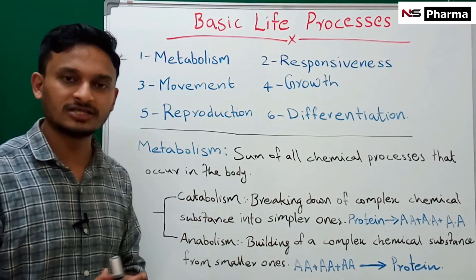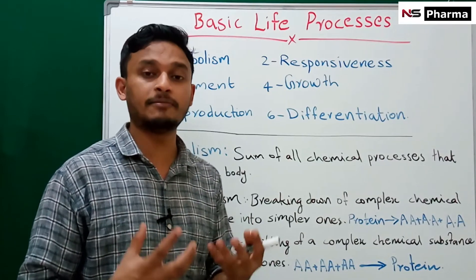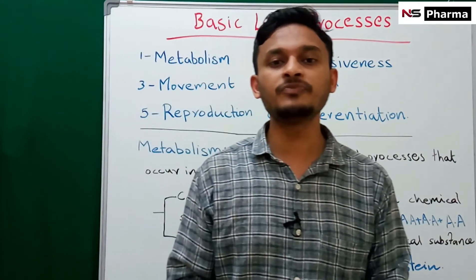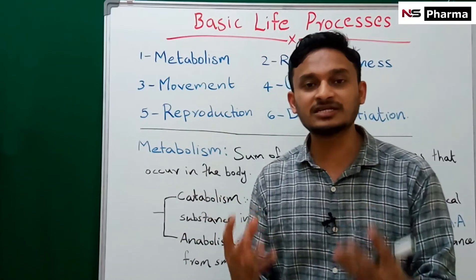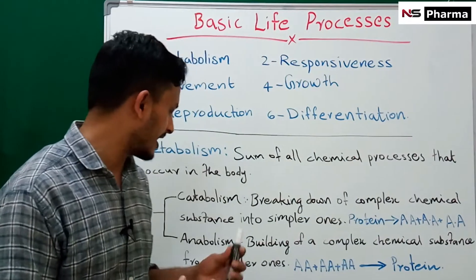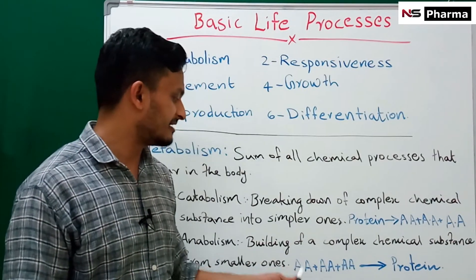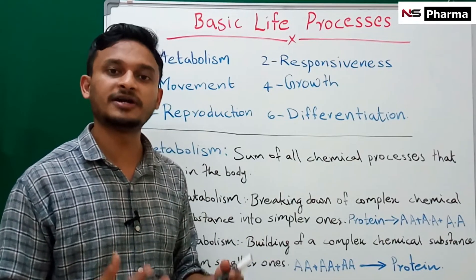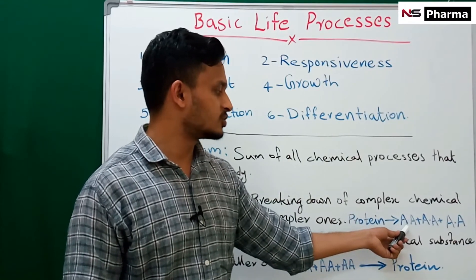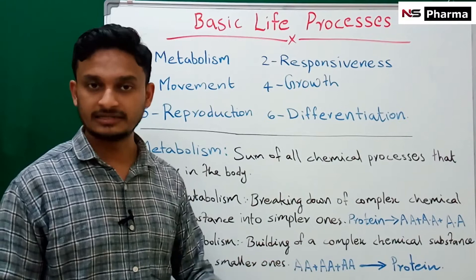The second type of metabolism is anabolism. Anabolism means the building up of complex chemical substances from simpler ones — simpler molecules combine together to form complex substances. For example, amino acids join together to form protein. So in catabolism protein breaks into amino acids, and in anabolism amino acids join together to form protein.